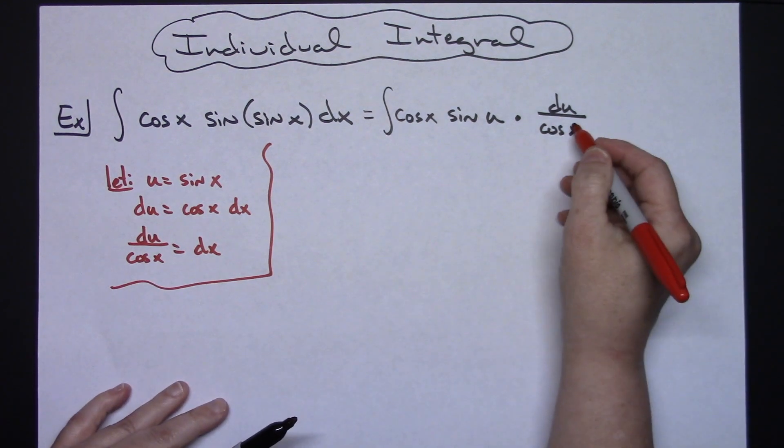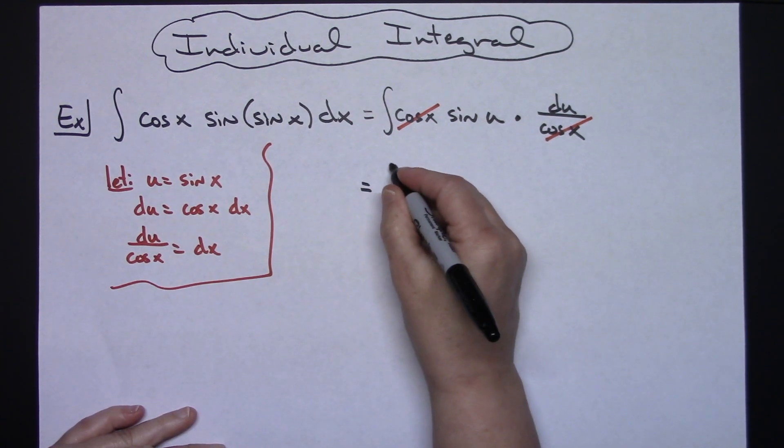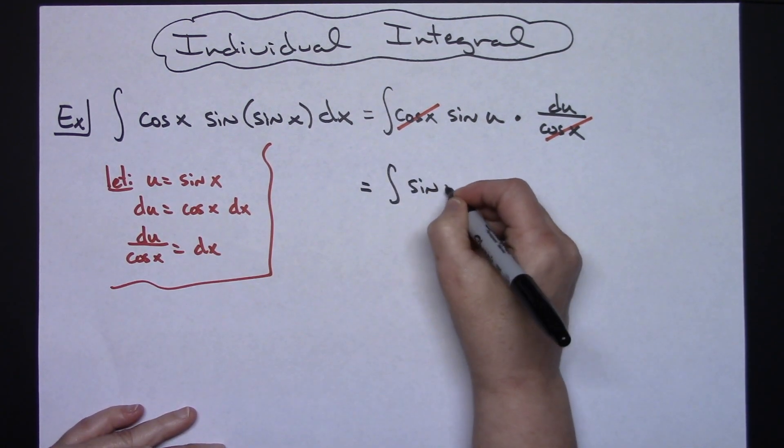That's then going to allow us to cross out those cosine x's. So that'll leave us then with just the integral of sine u du.